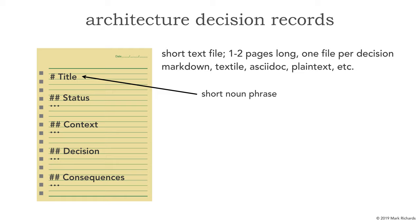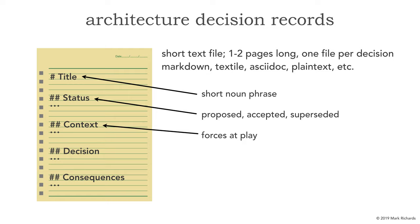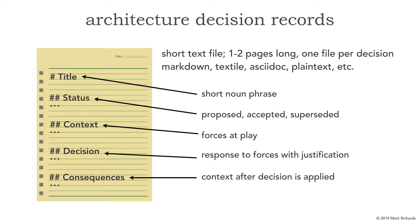The first section is a title — a short noun phrase that's numbered and describes the actual architecture decision. Then the status: whether it's proposed and needs to be approved by an architecture review board or your boss, accepted, or superseded. The context describes the problem and why you need to make this architecture decision, and I usually include some alternative choices as well. The decision section is probably the most important — this is your architecture decision combined with all the justifications. Finally, consequences: when you make an architecture decision, there are consequences, good or bad, and that forces us to think about and document them.